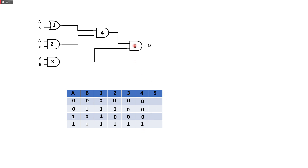For gate 5, we base the inputs on gates 3 and 4. It is also an AND gate. So: 0, 0, 0, and 1. This will be our final answer for this exercise.